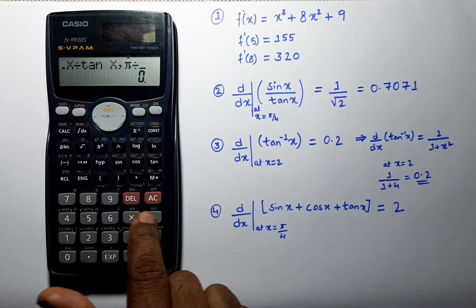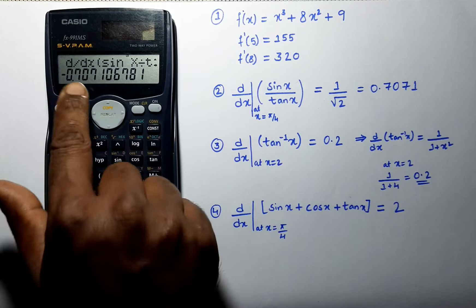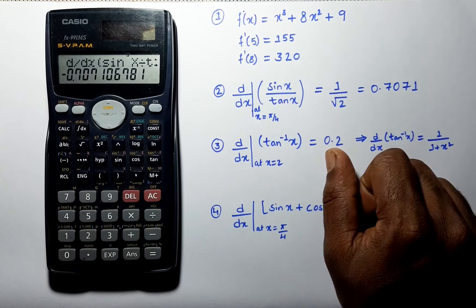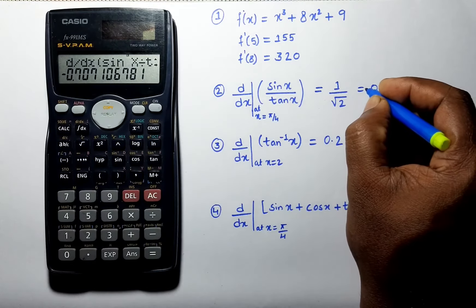And its answer is 1 by root 2 which is minus 0.707. It should be minus here.